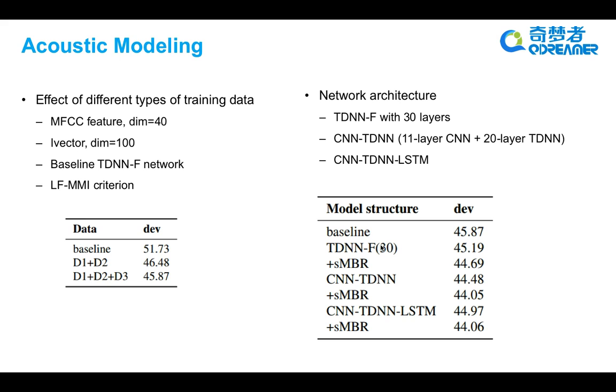While with data 1, data 2 and data 3, we can get better WER of 45.87 on development set, which is around 10% WER relative reduction over the baseline.